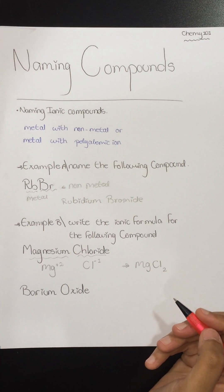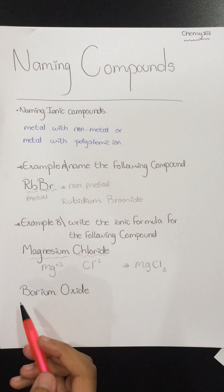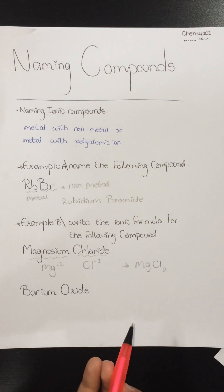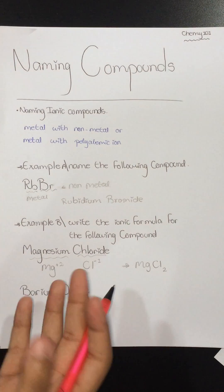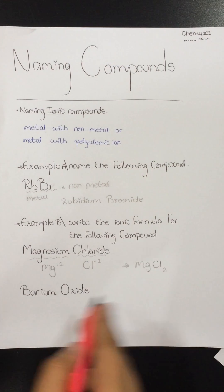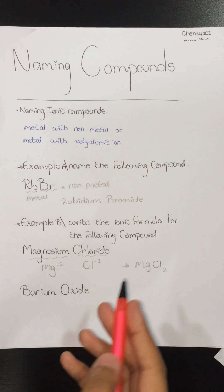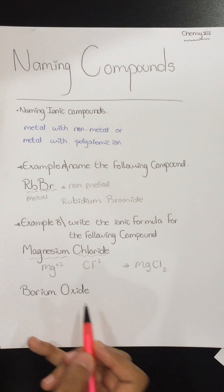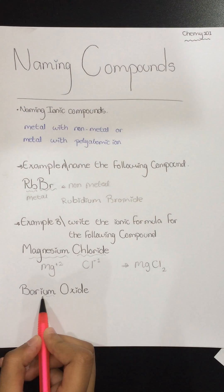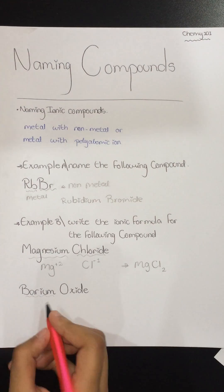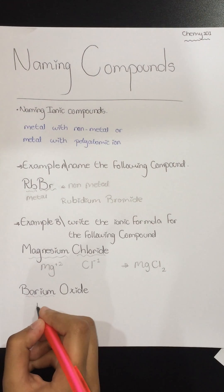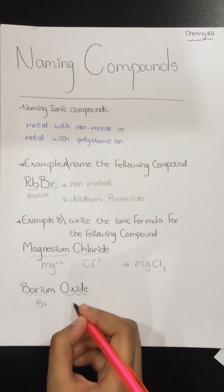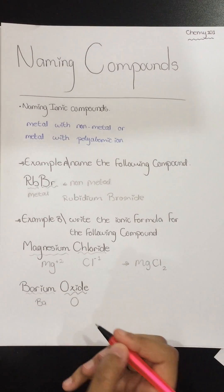In some elements, they have the same value of charge, so we should cancel the charge. Here we have an example of barium oxide. Barium's symbol is Ba, and oxide is oxygen, so O.